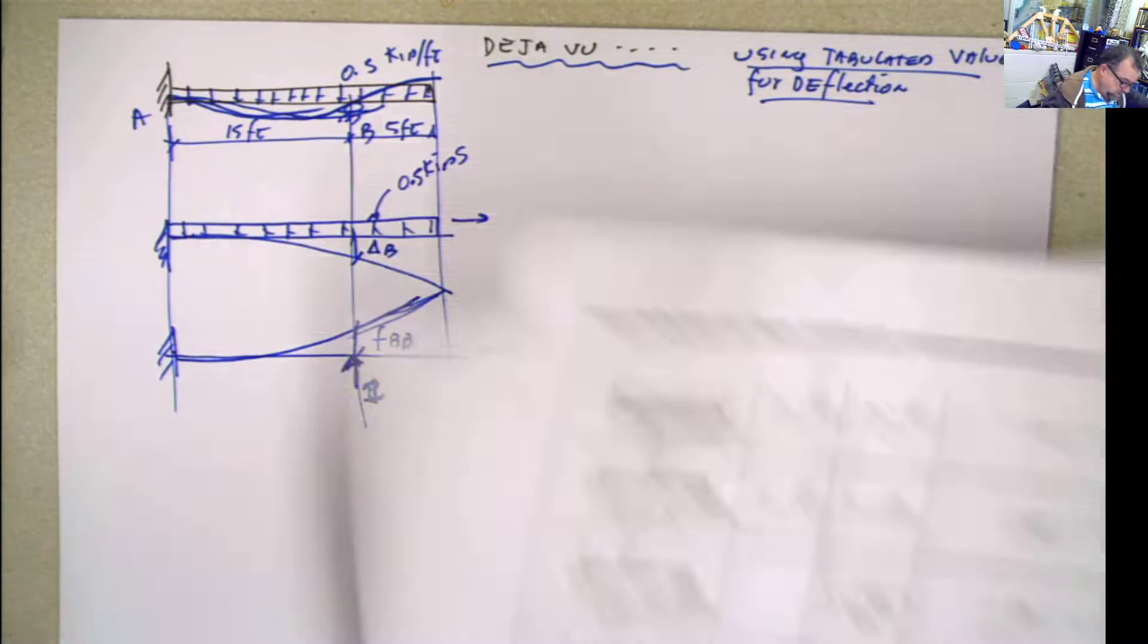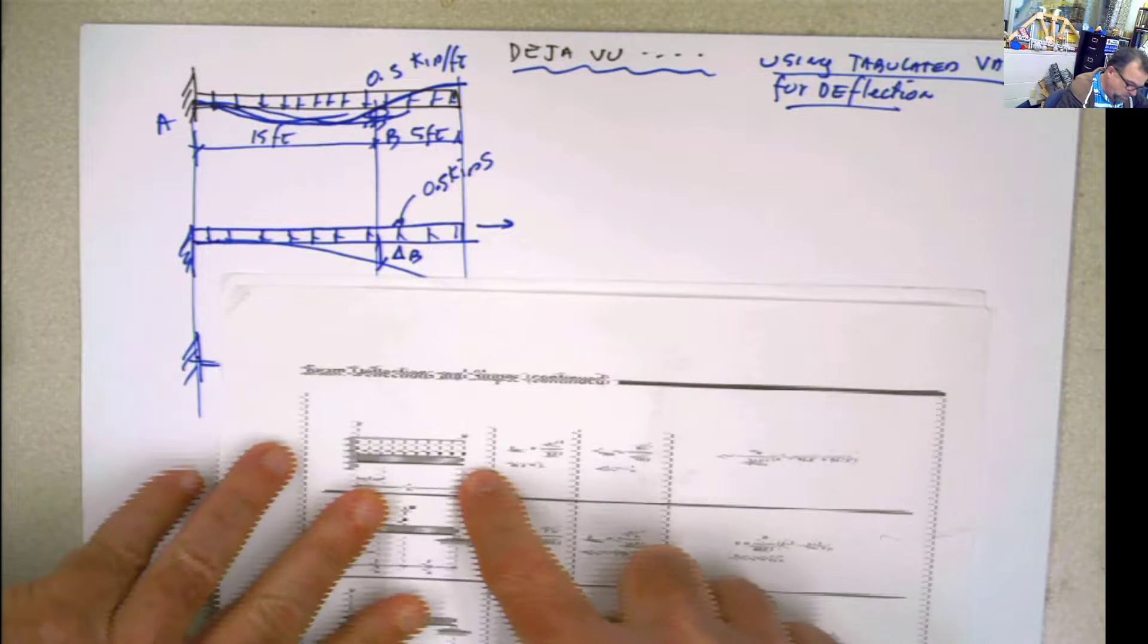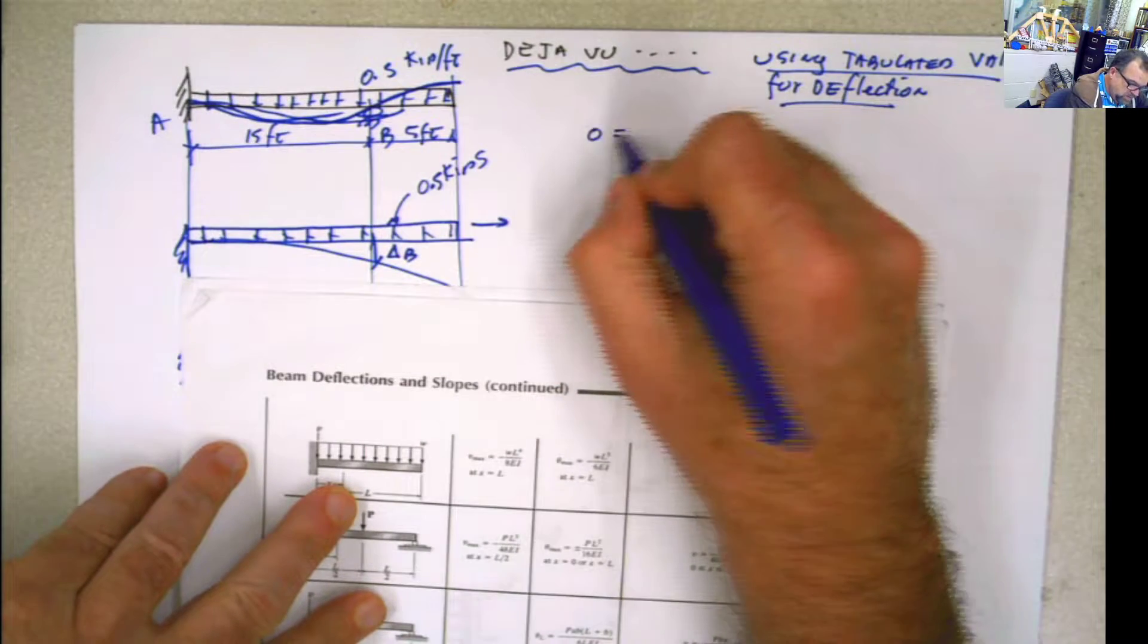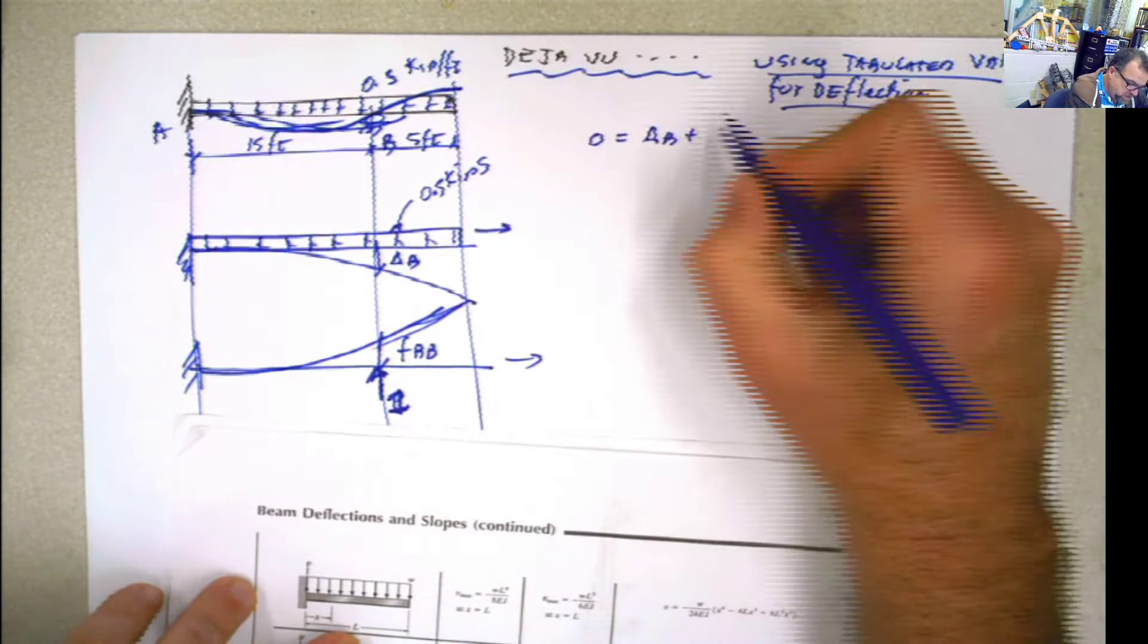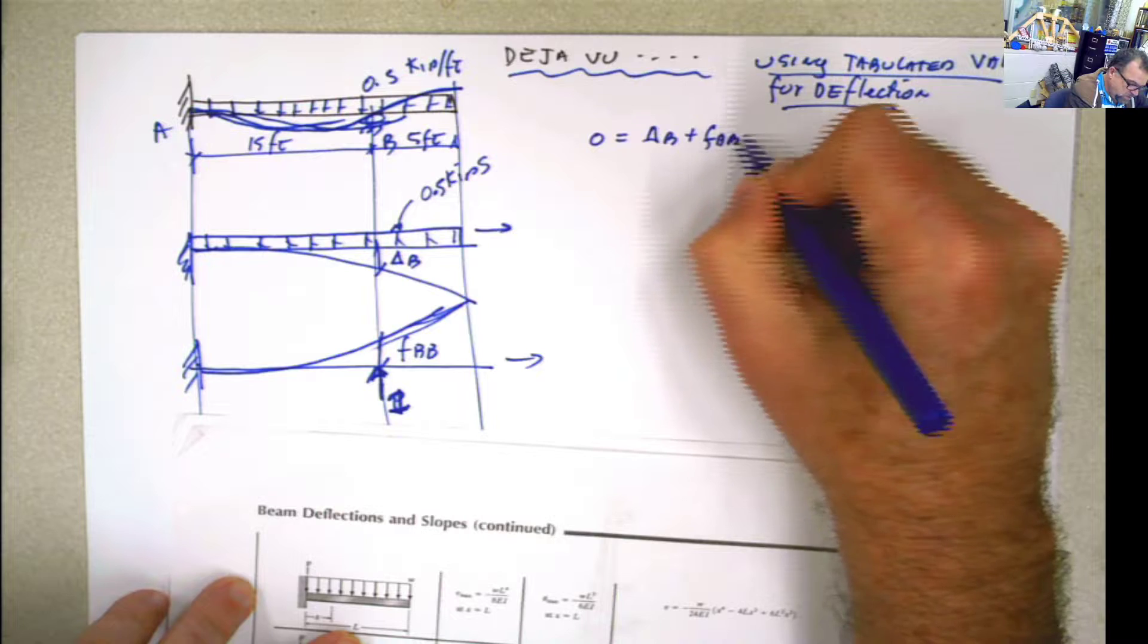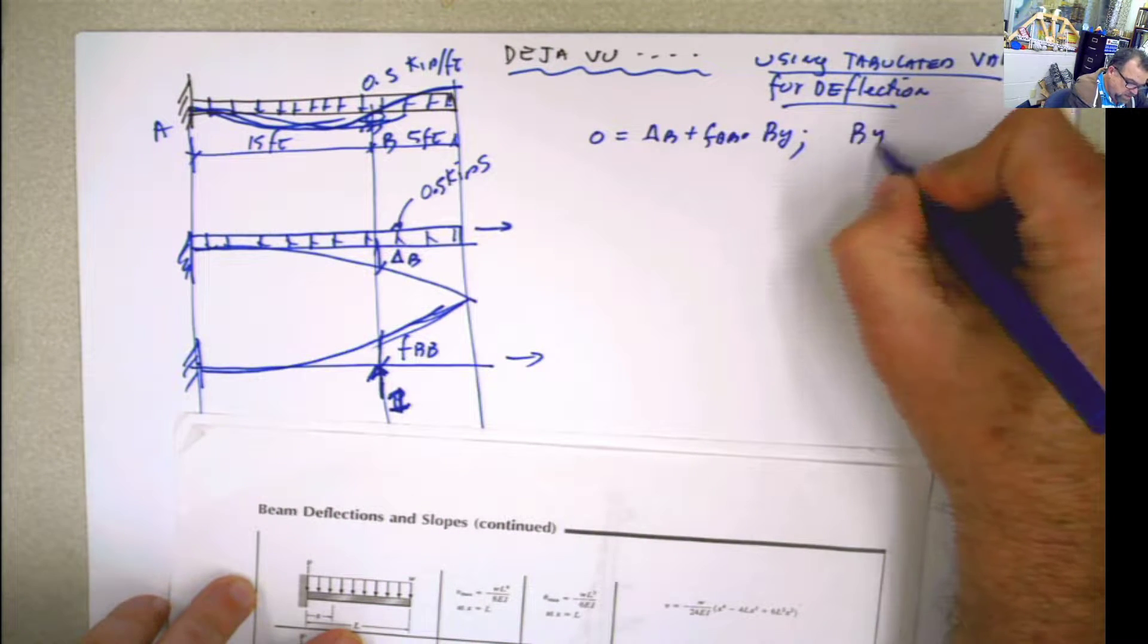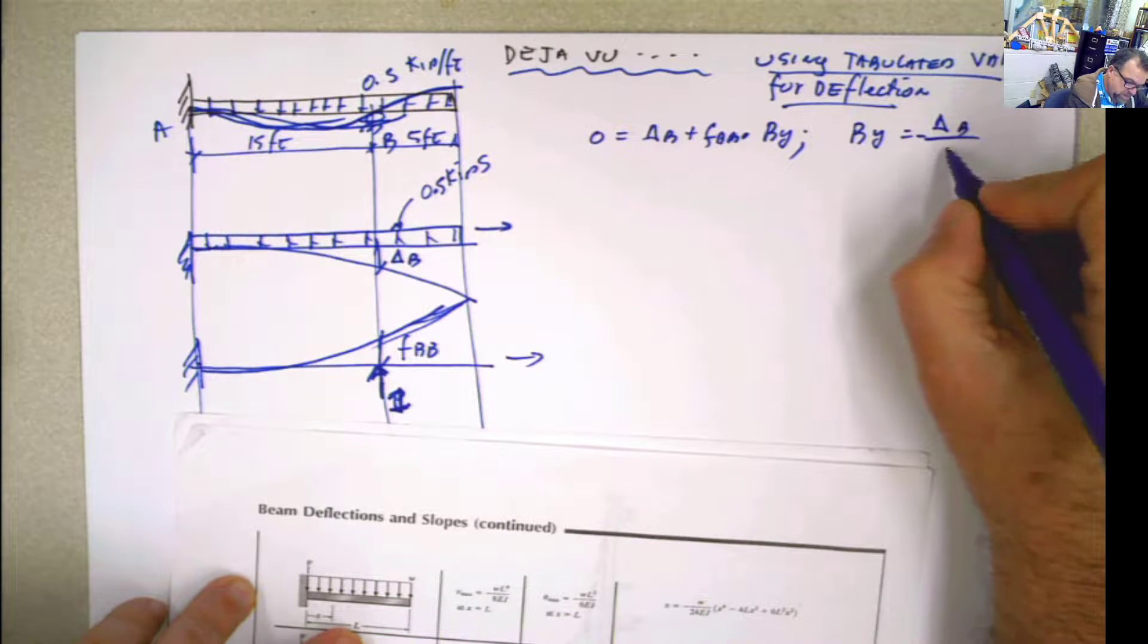The other books, these type of tables. Look at that. That's so complicated to do. What is the idea? The idea is that my total deformation is going to be this delta b plus this coefficient, fbb, multiplied by By. And from here, I solve for By. Negative delta b divided by fbb.